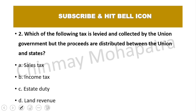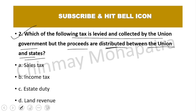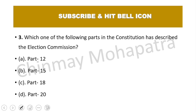Question number 2: Which of the following taxes is levied and collected by the union government but the proceeds are distributed between union and state government? The tax is collected by the union government and distributed to both state and union government. The right answer is B — income tax.